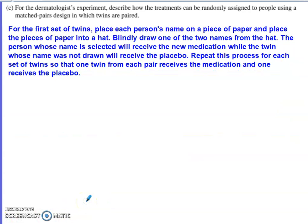For Part C, we need to describe how to randomly assign treatments using a matched pairs design. The easiest method: for the first set of twins, place each person's name on a piece of paper and put both into a hat. Blindly draw one name — that person receives the new medication, and the other receives the placebo. Repeat this process for each of the 36 sets of twins so that one twin from every pair receives the medication and one receives the placebo.